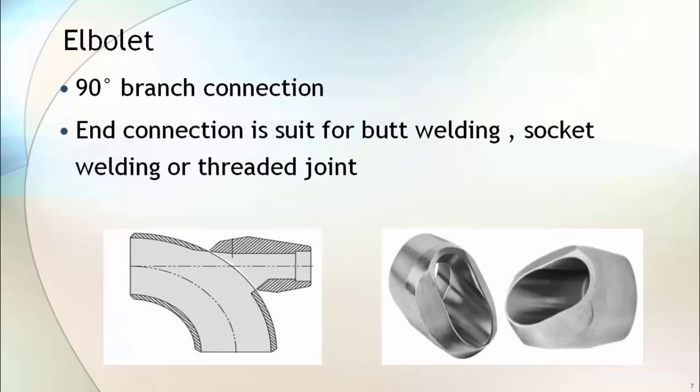Elbolet is a special type of OLET which fits on an elbow surface. It is a 90-degree branch connection and comes in different types of ends that are suitable for butt welding, socket welding, or threaded type joints.